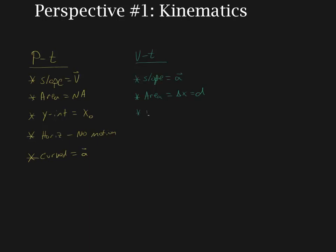The y-intercept of the velocity-time graph gives you the initial velocity. If the line is horizontal, the velocity is constant. If there's a slope, we know there's an acceleration. We're generally not going to deal with this, but just so you're not thrown off: if the velocity-time graph is curved, that means the acceleration is not constant — the acceleration is changing in time.